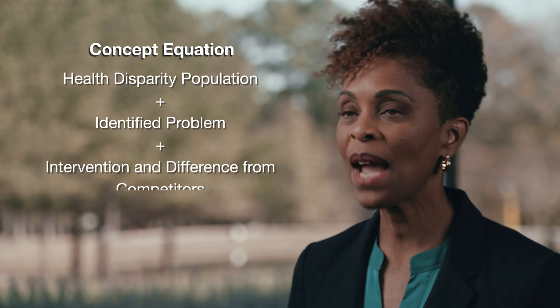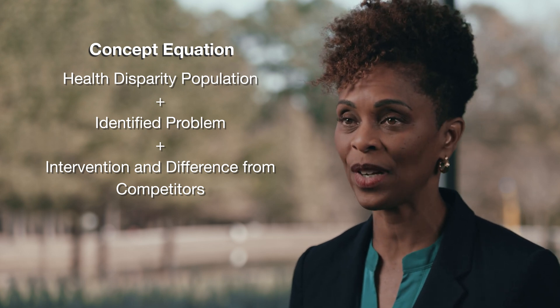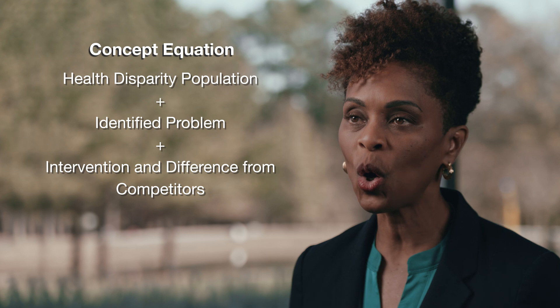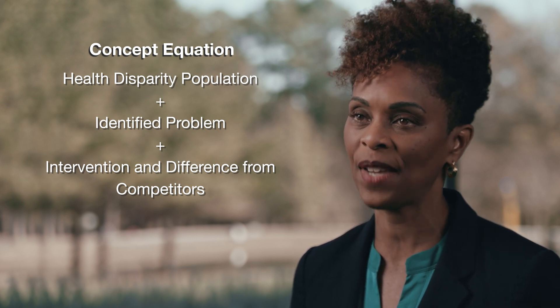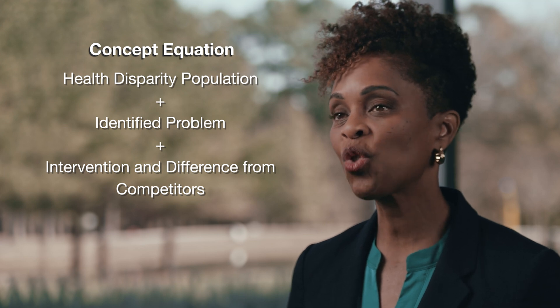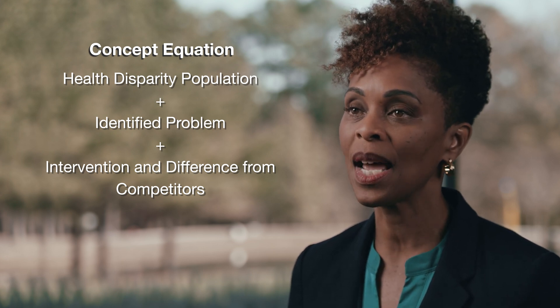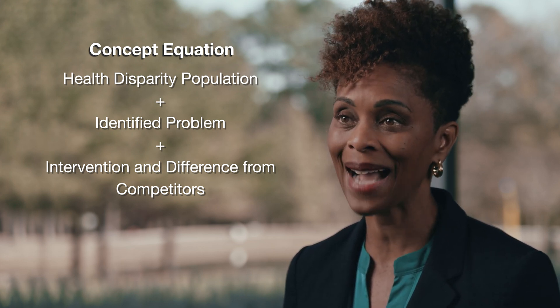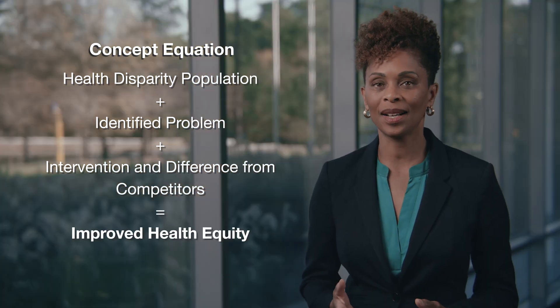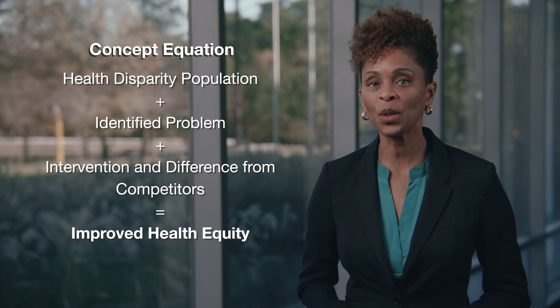Then you'll discuss your intervention and why it's an improvement over any of the current interventions on the market. Maybe you believe that a lack of culturally competent and accessible preventative care is the biggest barrier for this population as they try to manage their hypertension, and you're proposing to use mobile units staffed by specially trained, multilingual clinicians to improve access to care. Lastly, be sure to discuss how your intervention would improve health equity for that specific population. This first part of your application is where you'll discuss the how and the what of your intervention, so you want to ensure the reviewers understand your research question, the population and problem you'll be targeting, and the basics of your proposed intervention.